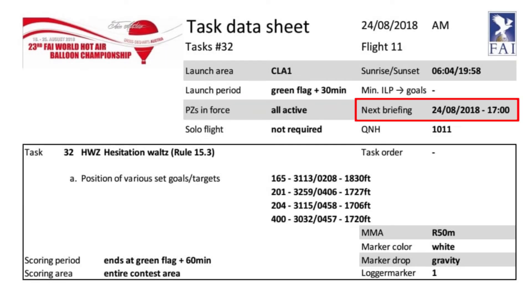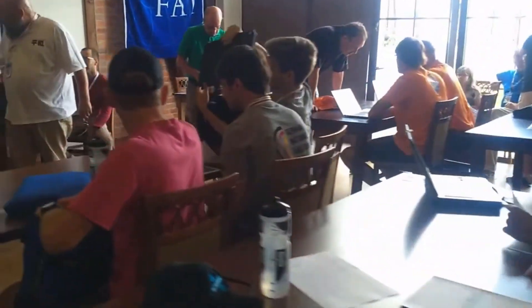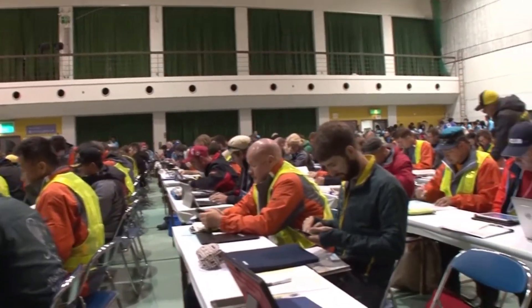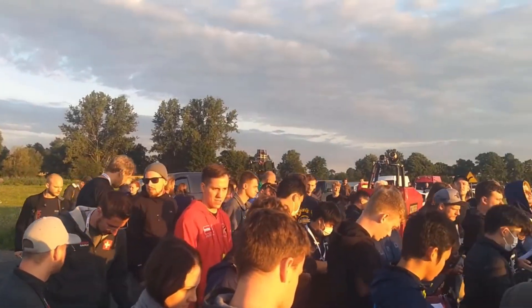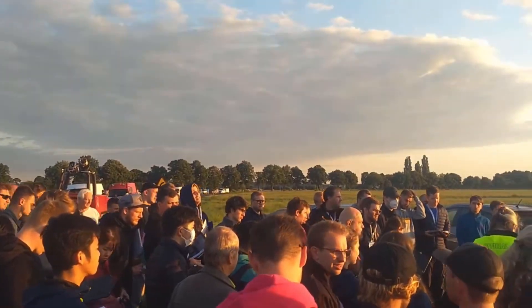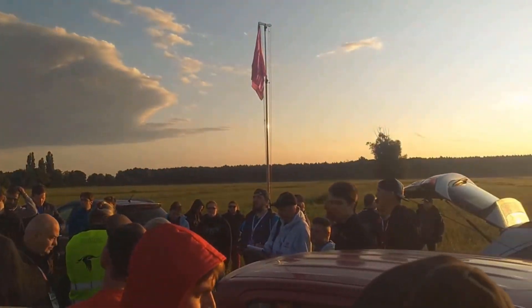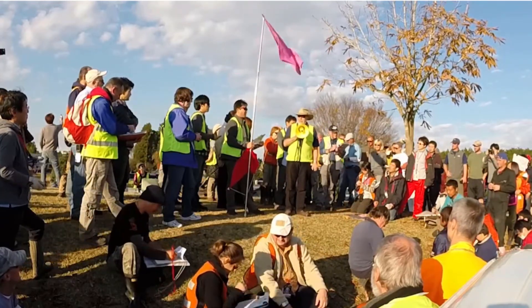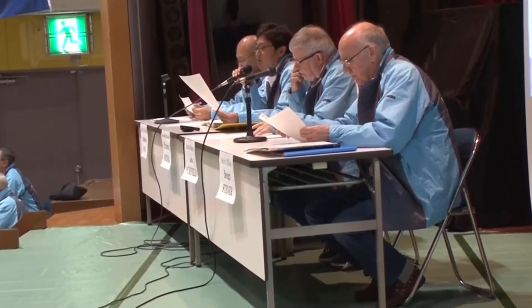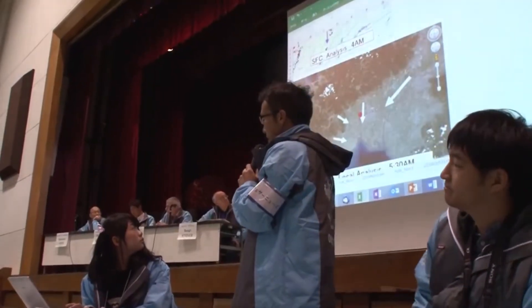The next briefing section is self-explanatory — it's the time of the briefing for the next competition flight. However, it's important to note that this does not include any supplementary briefings for the current flight, which the director can call either by mentioning during the briefing that there will be an additional briefing and giving a time and a place, or in the case of a common launch, by raising a pink flag at the signals pole. A supplementary briefing is an important tool for the director to once again be able to make changes to the task datasheet, but with the most up-to-date meteorological information available.